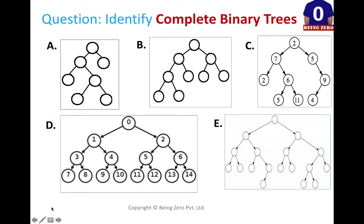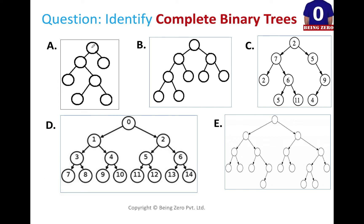Let's analyze whether A is a complete binary tree. At the first level, there could have been only one node and that is there. At the second level, there could have been two children of the root and both of them are there. Now this level can have left and right children — it has both — but this node doesn't have left and right children, and this is not the last level. So A is certainly not a complete binary tree.